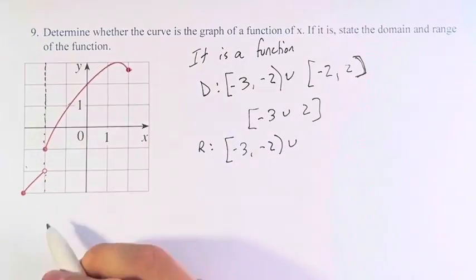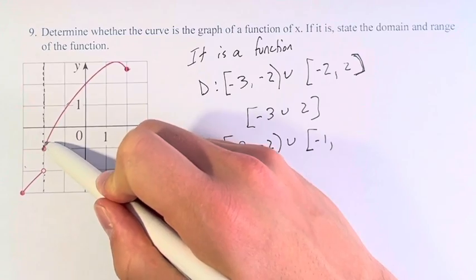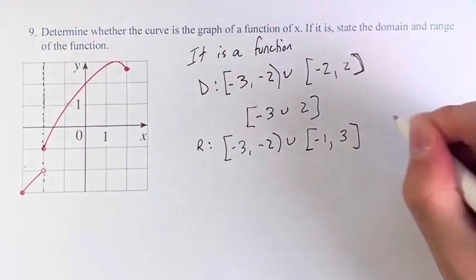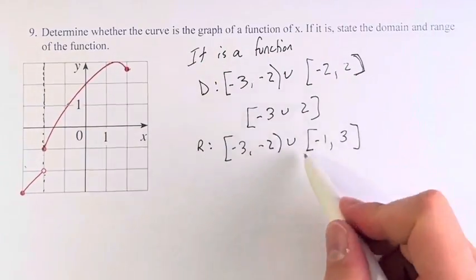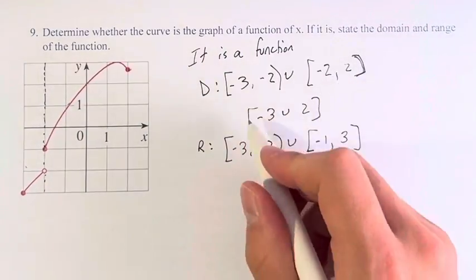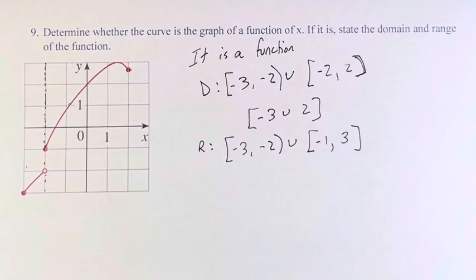And then, we jump up to negative 1, inclusive. And then, that goes all the way up to the maximum value, which is 3, and then goes back down again and doesn't hit any new values. So, this is your final domain. This is your final range for the graph, which is a function.